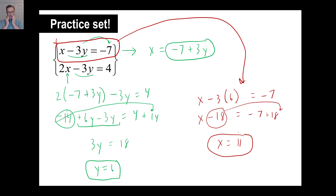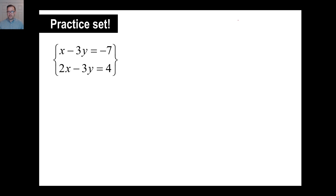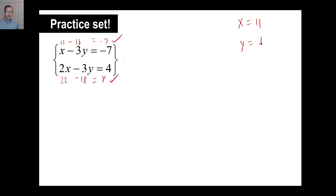Let's just verify our answers. We said x is 11 and y is 6. First equation: 11 minus 3 times 6 is 11 minus 18, which equals negative 7. Yes. Second equation: 2 times 11 is 22, and negative 3 times 6 is negative 18. Does 22 minus 18 equal 4? Yes. Both check out.